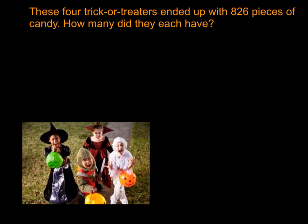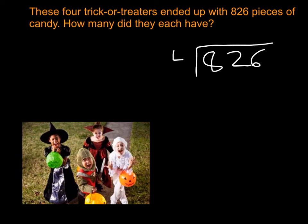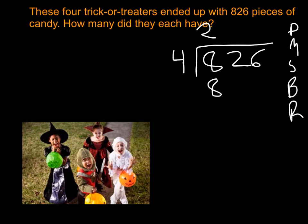Alright, let's solve it together. We've got 826 pieces — let's divide it out over 4 kids. We need our steps: divide, multiply, subtract, bring down, repeat. How many times can 4 go into 8? Well, 4 times 2 is 8, so I put a 2 up there. Then 4 times 2 is 8, subtract to get 0, and bring down the 2.